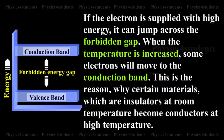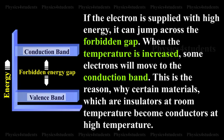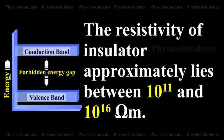If the electron is supplied with high energy, it can jump across the forbidden gap. When the temperature is increased, some electrons will move to the conduction band. This is the reason why certain materials which are insulators at room temperature become conductors at high temperature. The resistivity of an insulator approximately lies between 10 raised to 11 and 10 raised to 16 ohm meter.